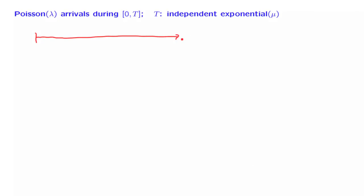In this video, we're going to establish a nice property of the Poisson process. We have a Poisson process with arrival rate lambda, and arrivals keep coming. We watch this process until a certain random time T, where T is an exponential random variable with some parameter, and T is independent from the Poisson arrival process. What we're interested in is the number of arrivals that happened during this time.